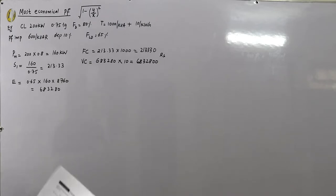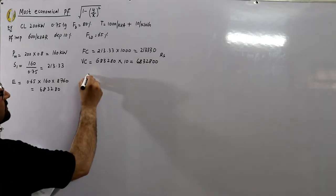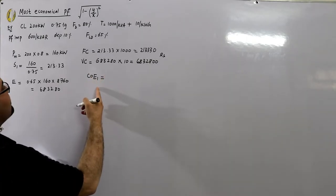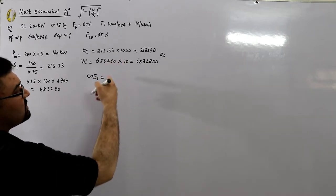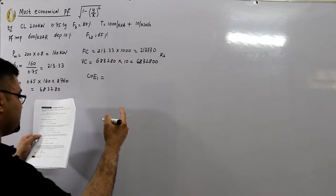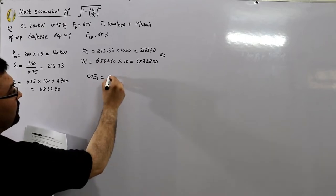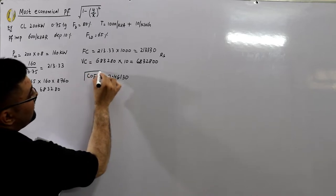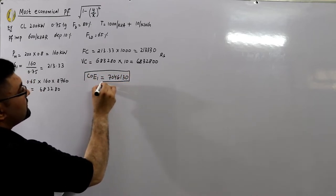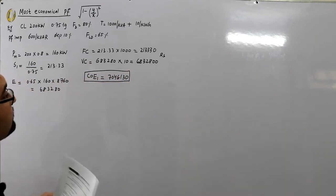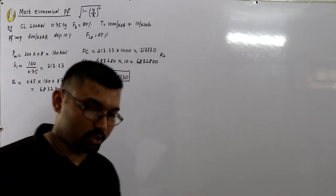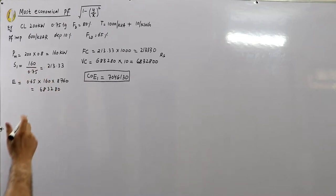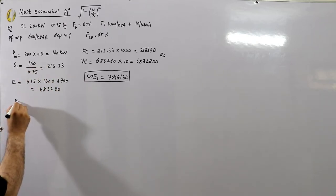The total cost of electricity before power factor correction, C₁, is the fixed cost plus the variable cost, and this comes out to be 7,046,130 rupees. This is the current scenario before any power factor correction.